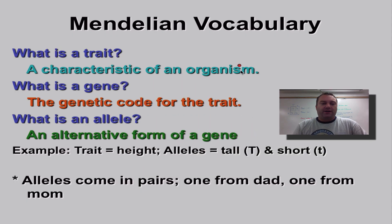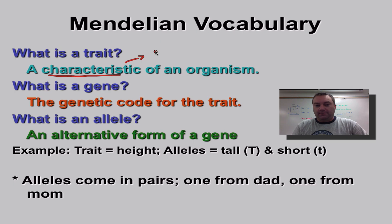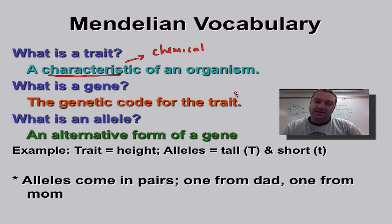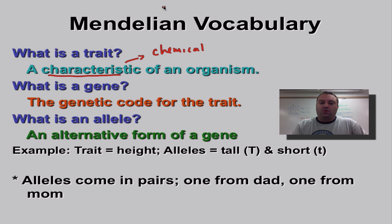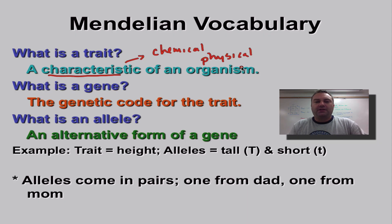What is a trait? A trait is a characteristic of an organism. It can be a chemical trait — for example, an organism with antibiotic resistance, the ability to defeat a chemical, which you find in bacteria. Or it can be an outward or physical characteristic, like hair color, eye color, etc.